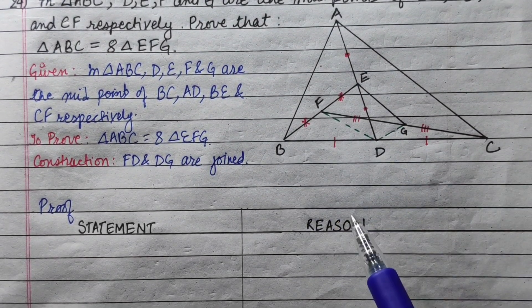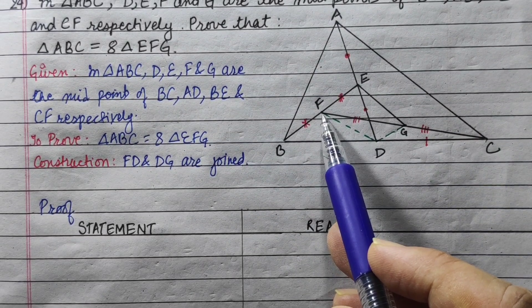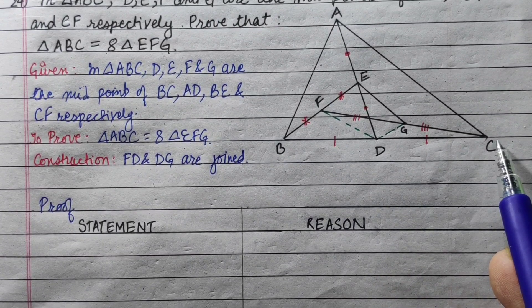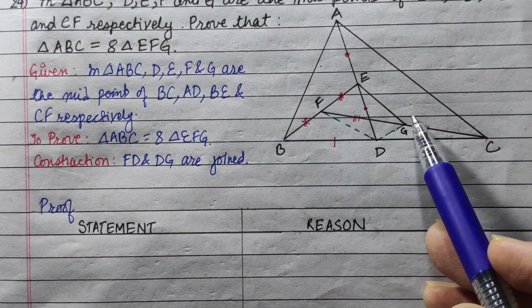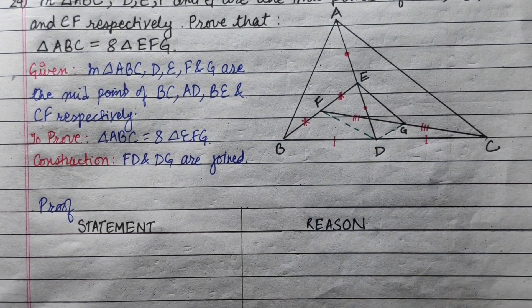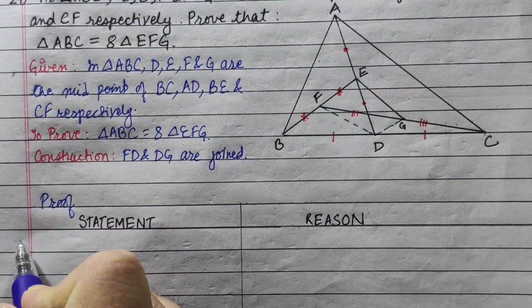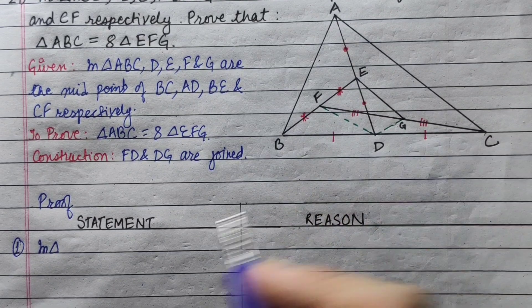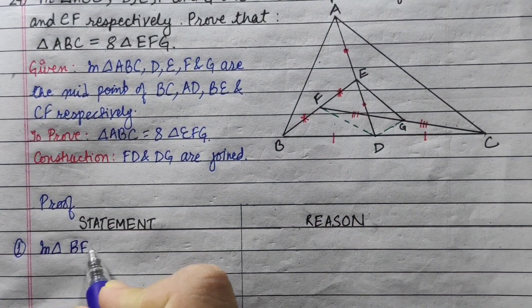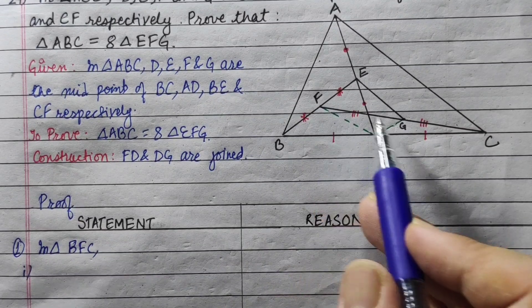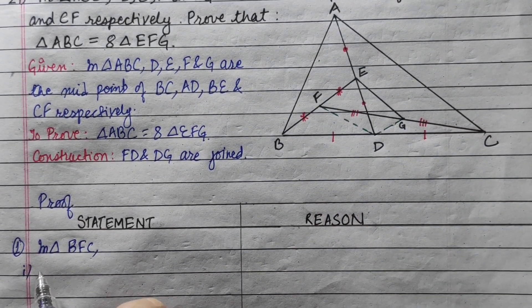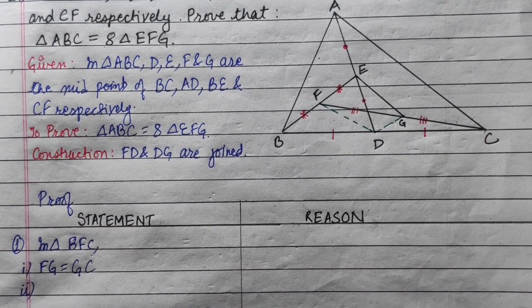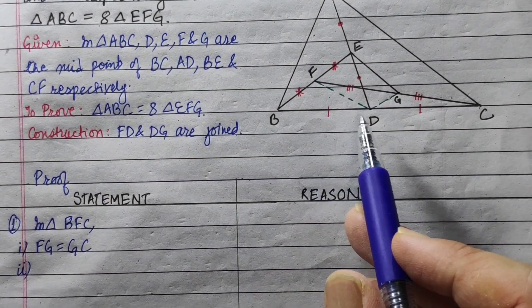In triangle BFC, G and D are the midpoints of FC and BC respectively. So GD is equal to half of BF, and BD is equal to DC.